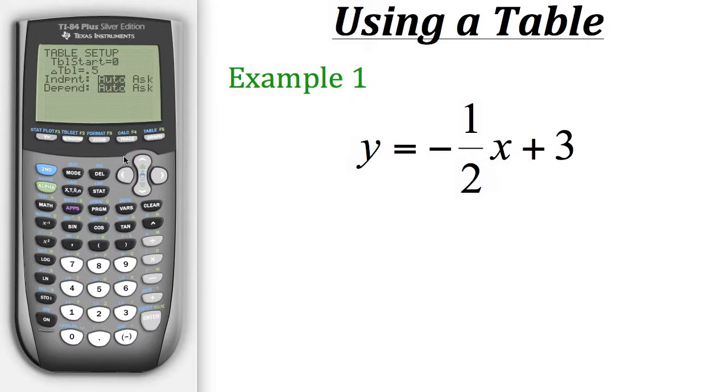But if we want very specific x values and we don't care about scrolling through a bunch of numbers, we could actually go down to our independent variable table and switch it over to ask and hit enter on it. And once we've done that, we could go back to our table and put in whatever x values we want. So for example, in our table, maybe we want an x value of 0 and 15 and then 27 or maybe even 54.8. I mean, you could put in whatever numbers you want and it'll give you your y value. So with this method, you could also generate a table that will fit your needs.